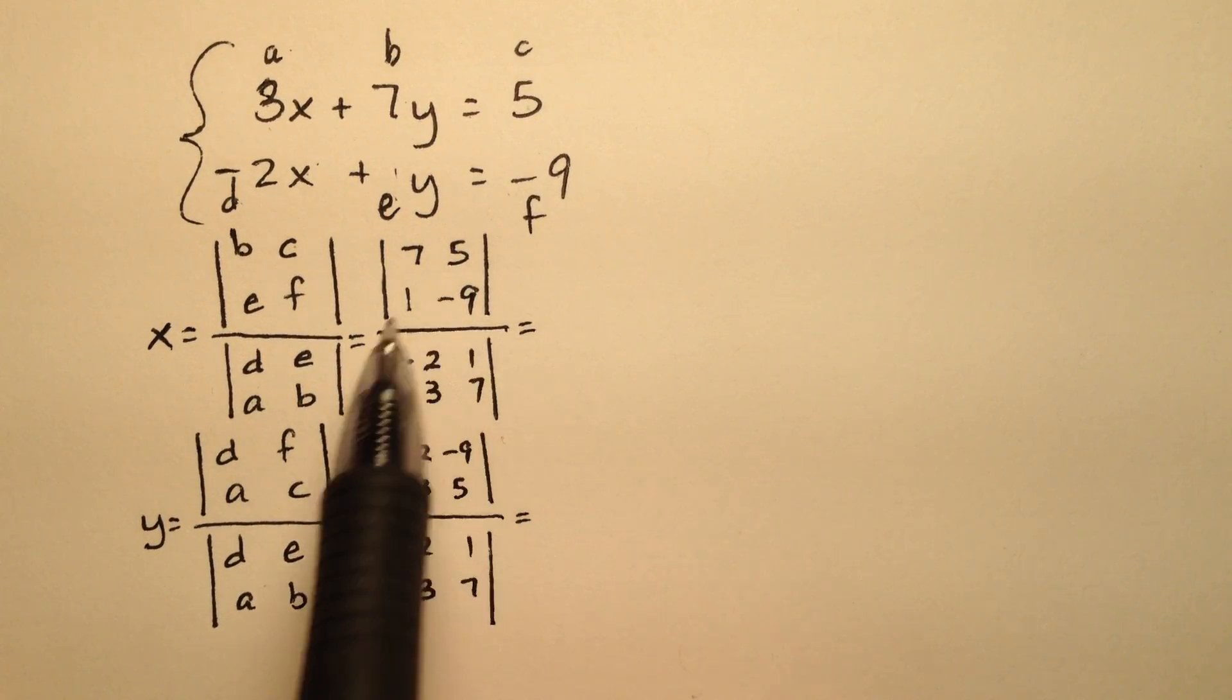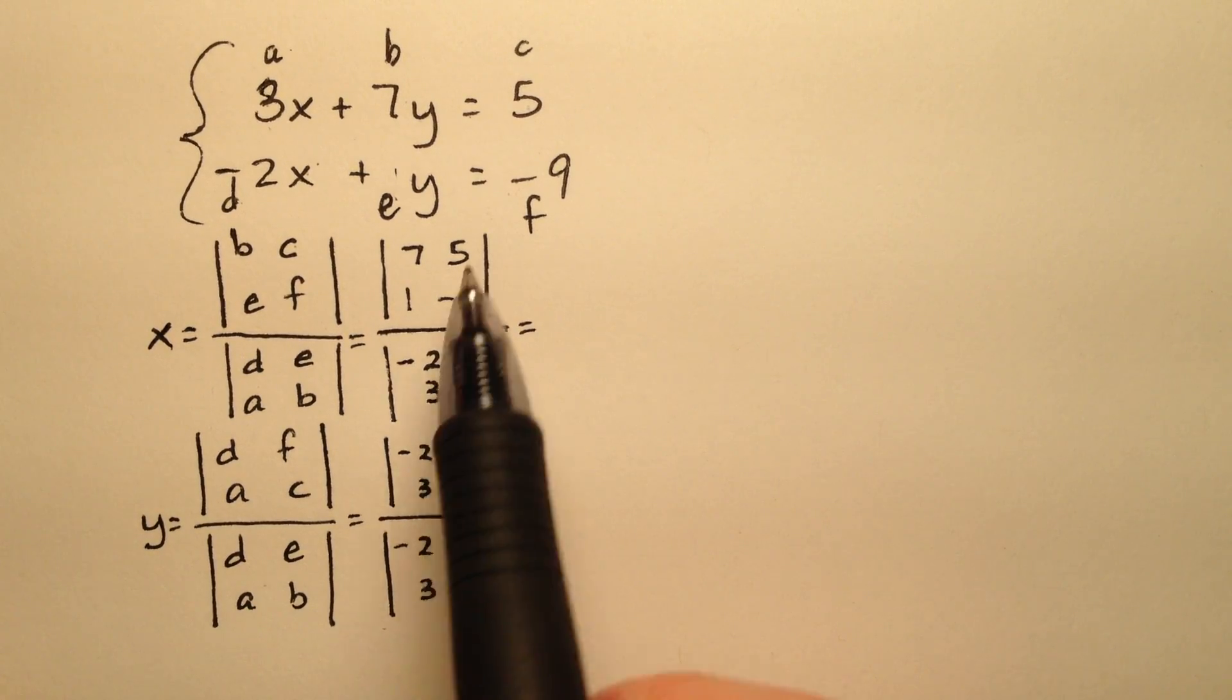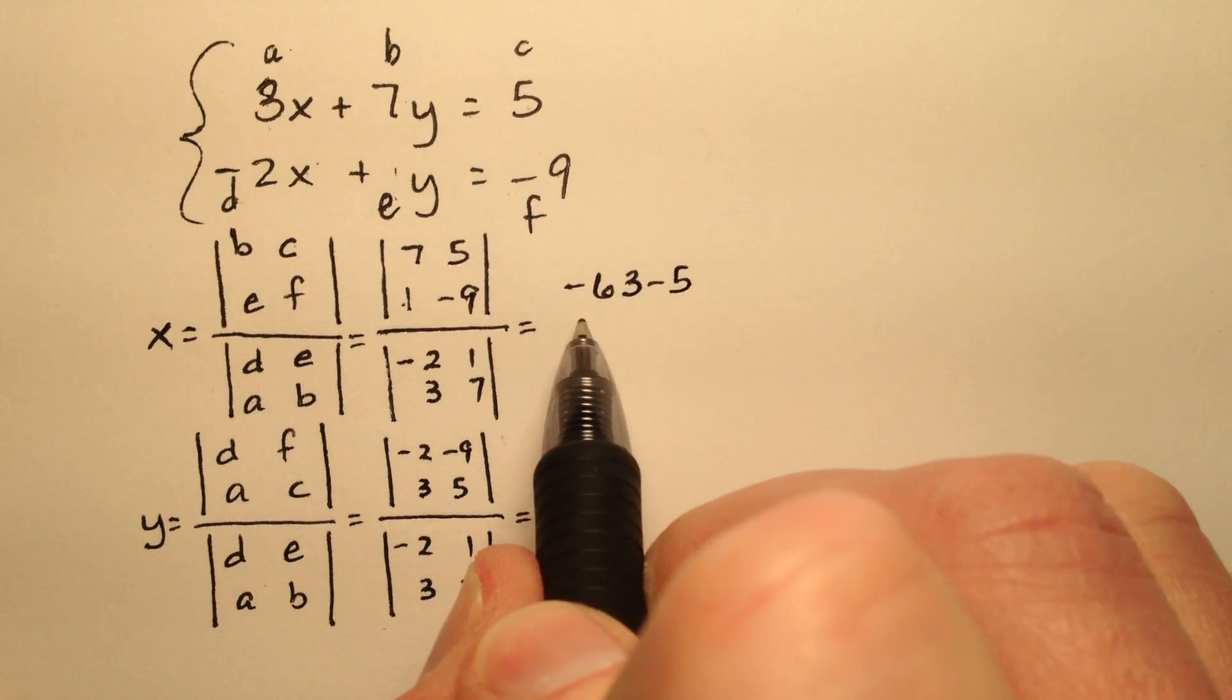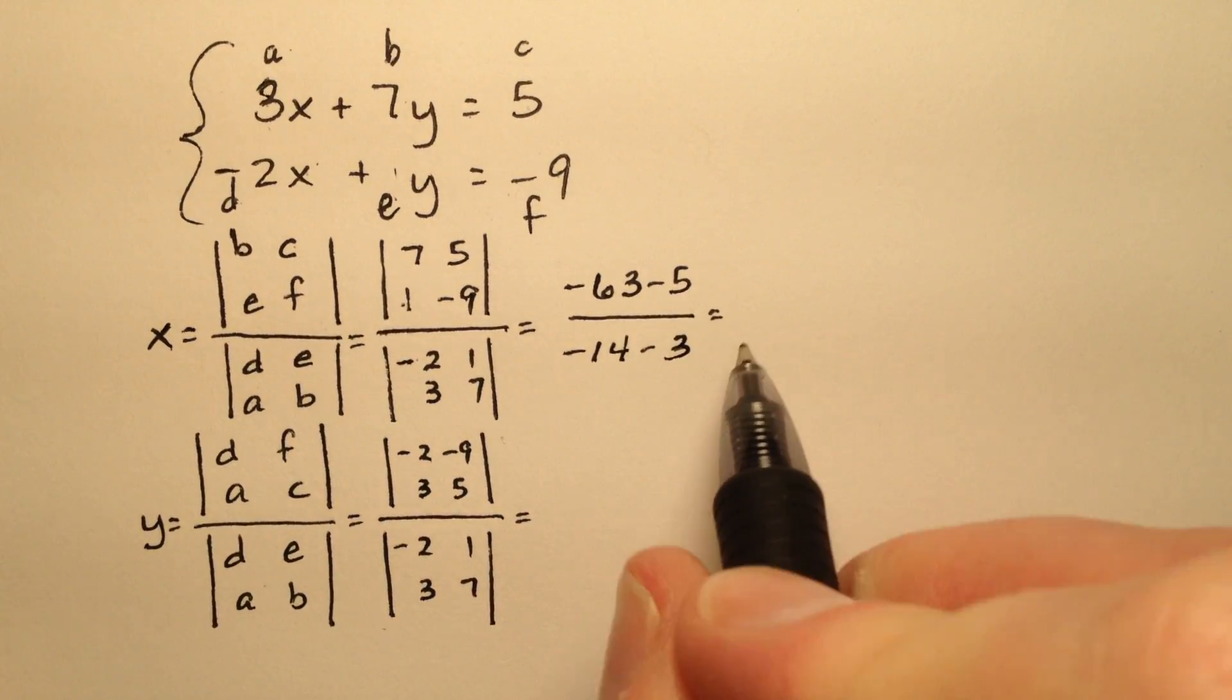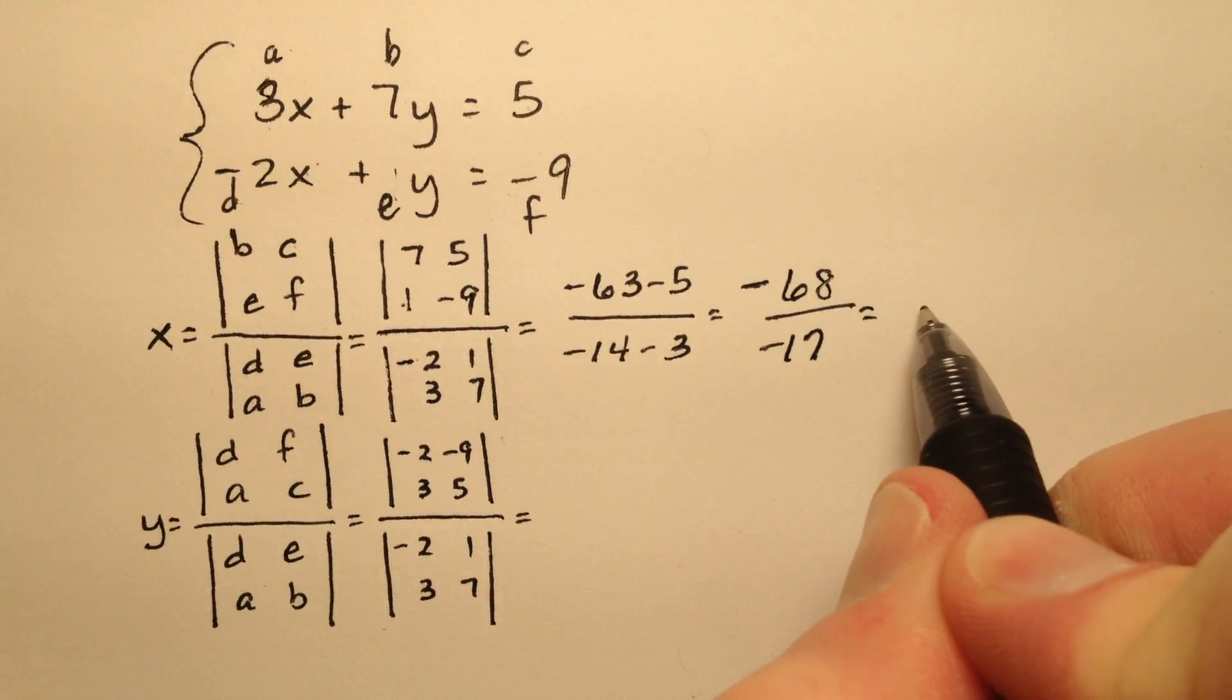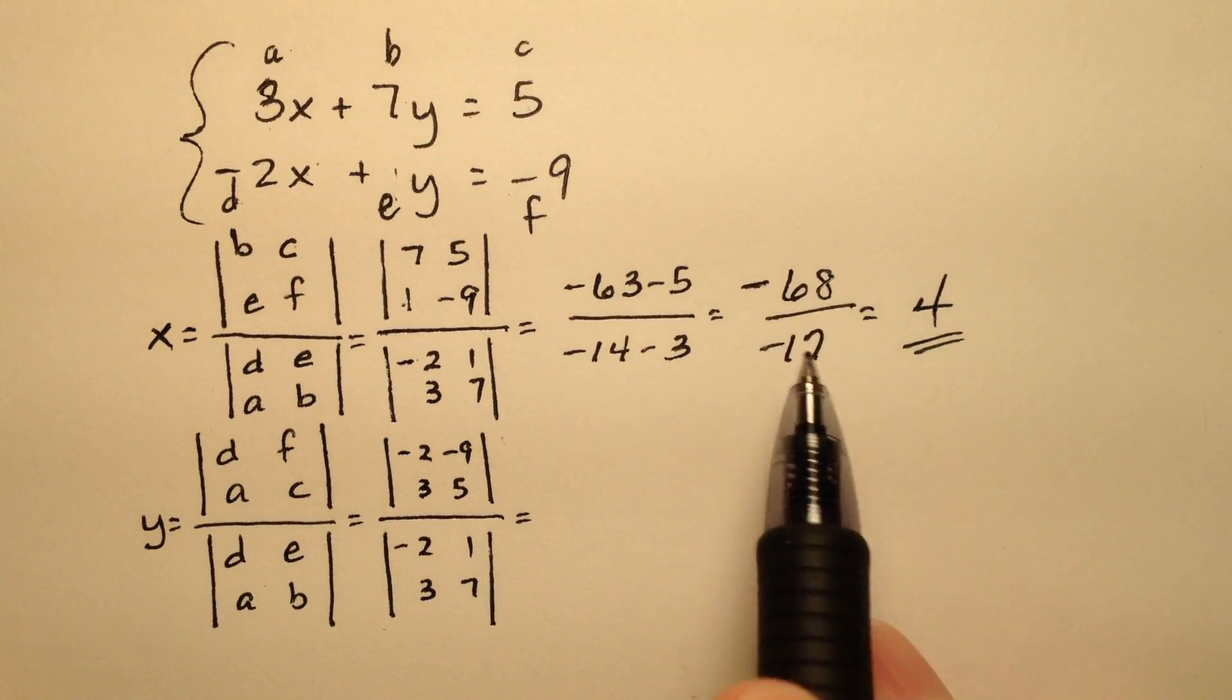So now it's just a matter of simplifying each one of these ratios. So 7 times negative 9 is negative 63 minus 1 times 5. My denominator looks like negative 14 minus 3. So this looks like negative 68 divided by negative 17, which means my X value is 4 when I divide those.